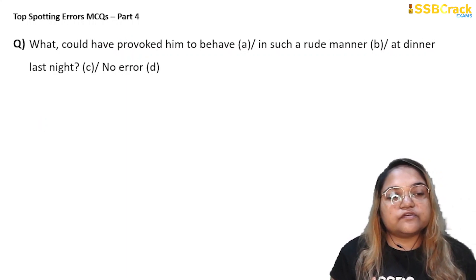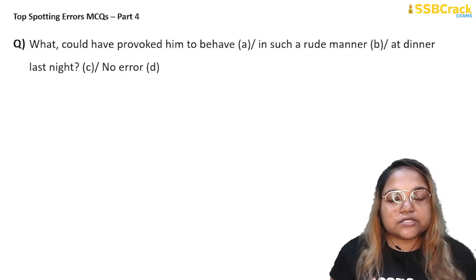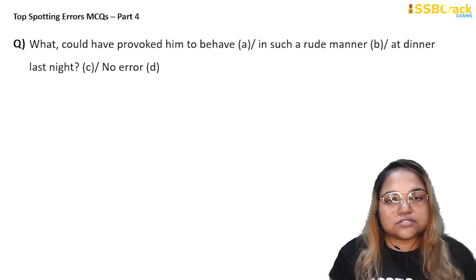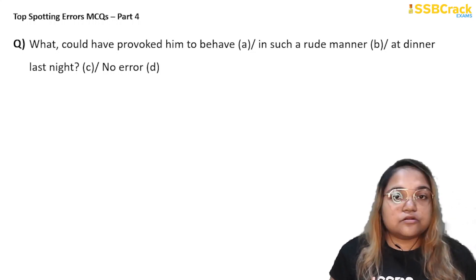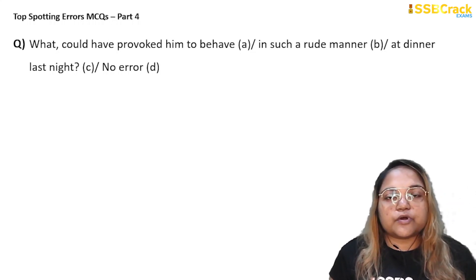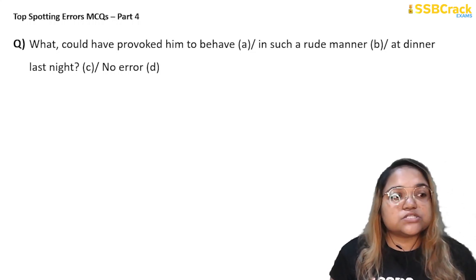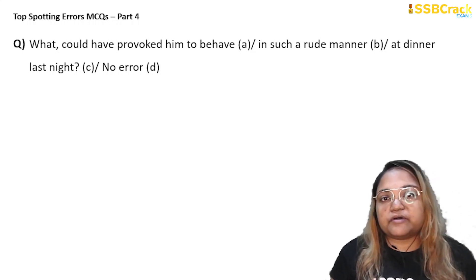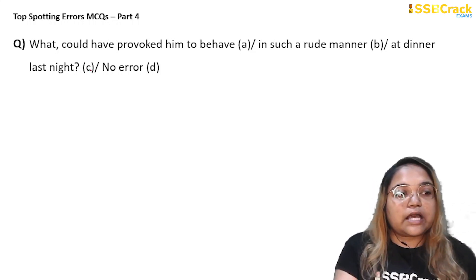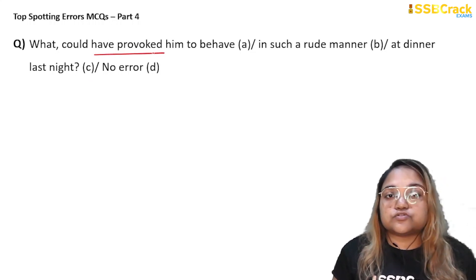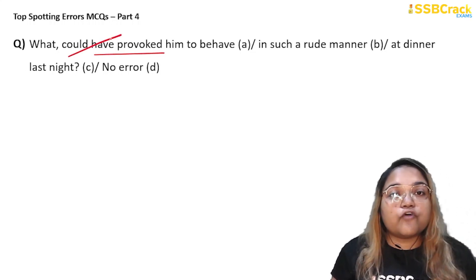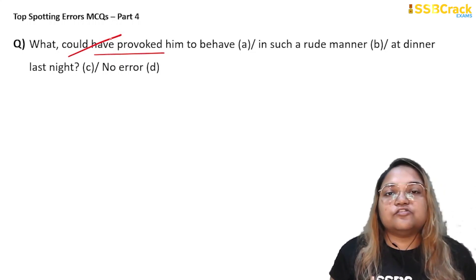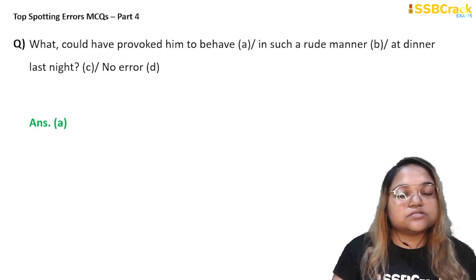Next question: 'What could have provoked him to behave in such a rude manner at dinner last night?' At first the sentence seems correct, but D is not the answer — the error is in part A. The sentence refers to an event at a definite time in the past: 'last night.' Whenever you have a definite past time reference, you do not use past perfect or any perfect tense — you use simple past. 'Could have provoked' is wrong; it should be 'what provoked him.' Answer: option A.